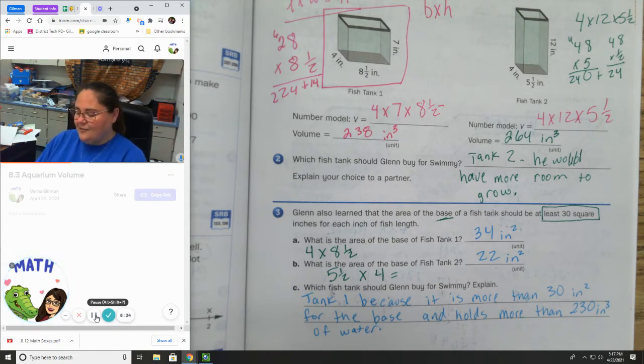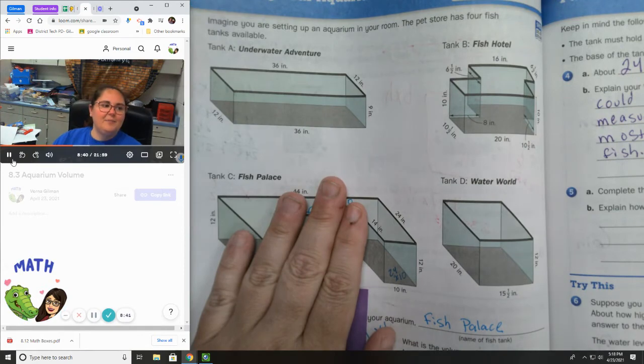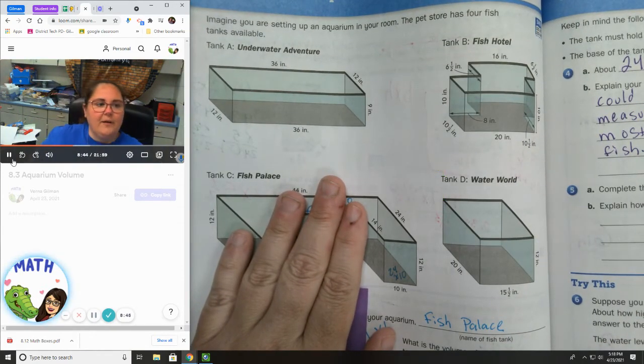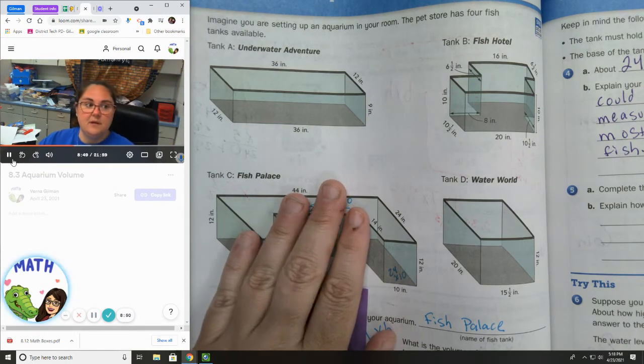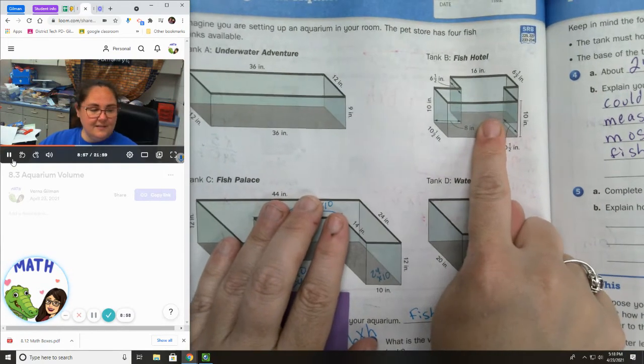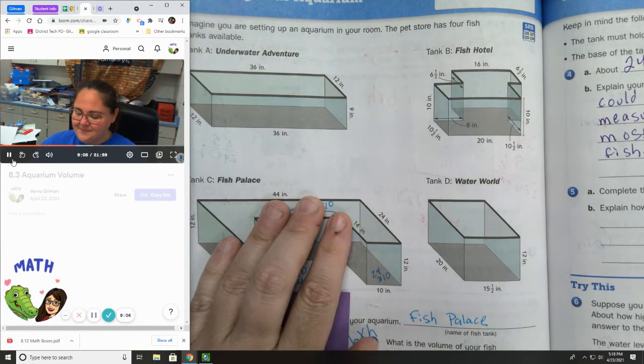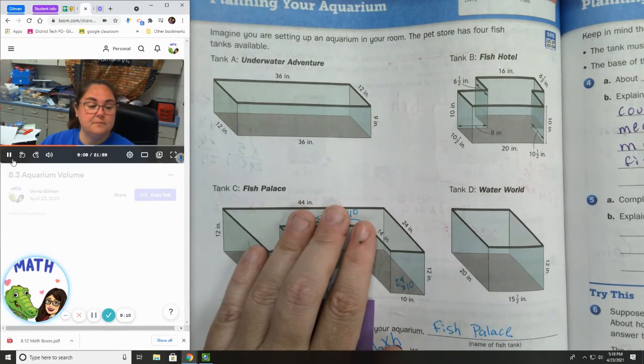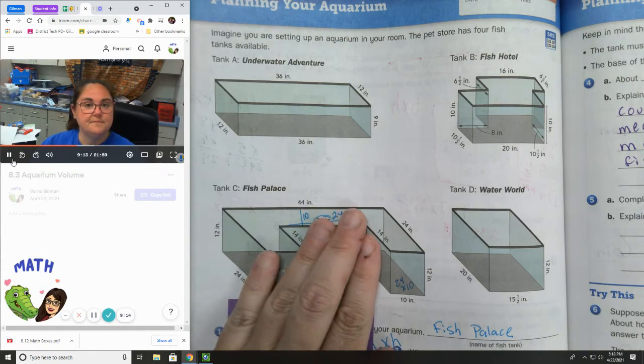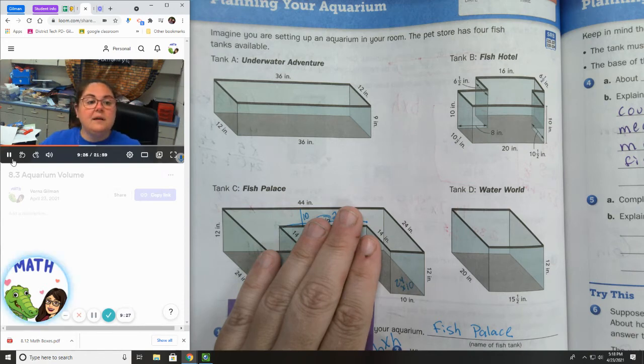Now we're going to go to page 284. On page 284 in your math workbook, we are going to look at the question. It says, imagine that you're setting up an aquarium in your room. The pet store has four fish tanks available. We have A, the underwater adventure. Tank B, the fish hotel. Tank C, we have fish palace. And tank D, we have water world. So choose the tank that you would want for your aquarium. This one, you get to pick your own. You get to use your opinion. Which one do you think is the best? Which one do you like best? What look is best for you?